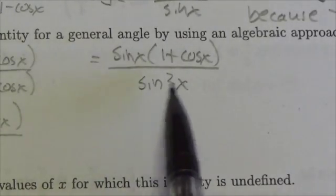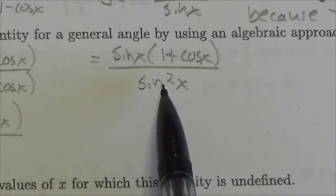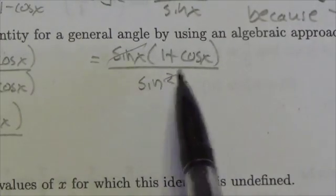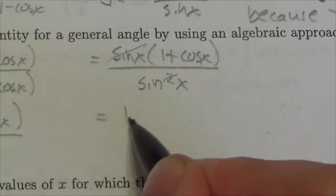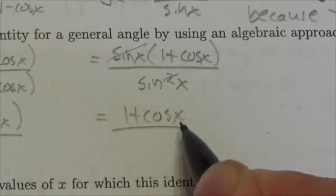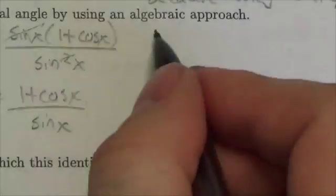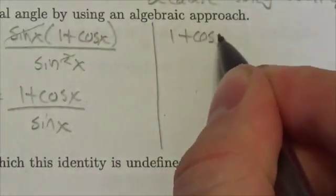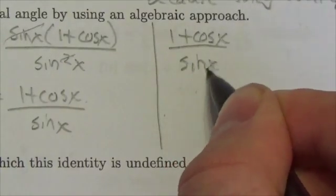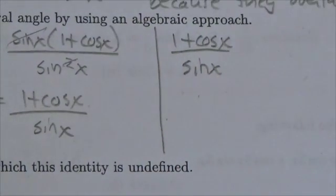Well, yeah, there's a sine of x here and two factors of sine x in the denominator. So I can cancel one of those and I will be left with 1 plus the cosine of x over the sine of x. And that's exactly what we want because that was the expression on the right-hand side of this identity.